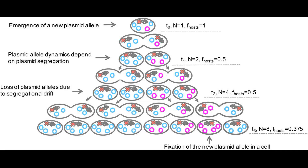For high copy plasmids, large numbers ensure that each daughter cell receives a few copies by chance alone, without any need for an active partition system. However, for chromosomes and low copy plasmids, segregation requires the action of proteins which actively move the chromosomes, pushing and pulling them towards their intended places. This partition machinery consists of three parts.